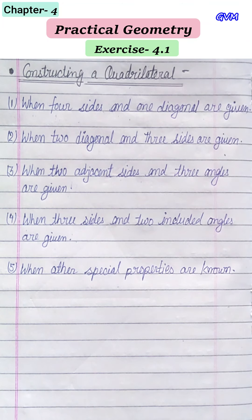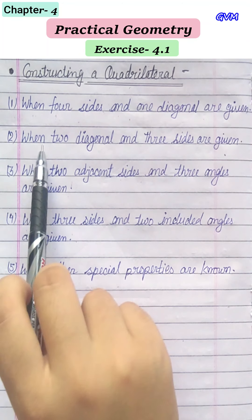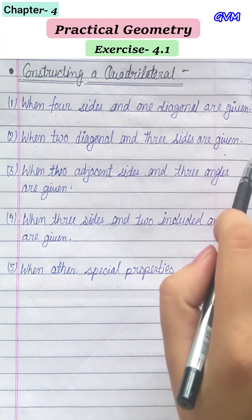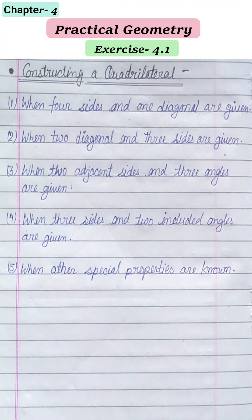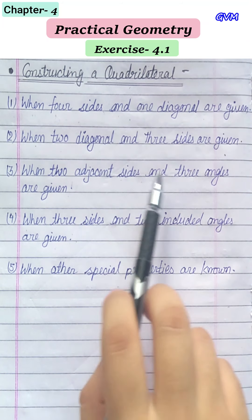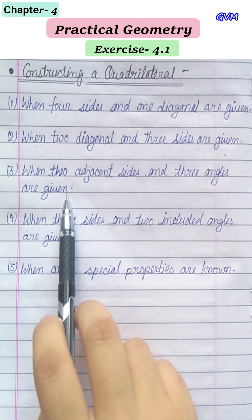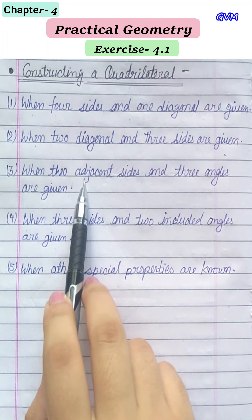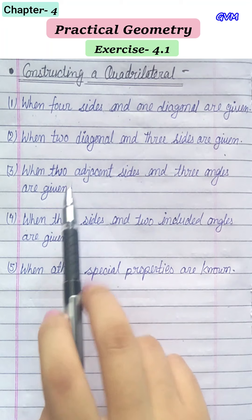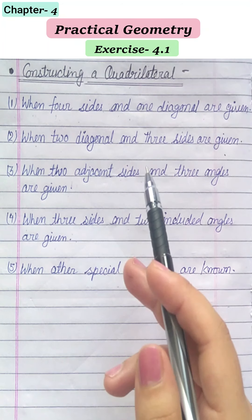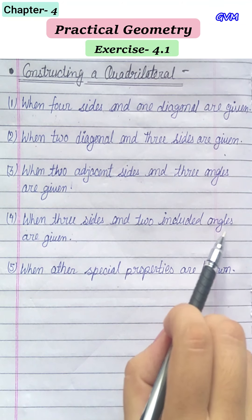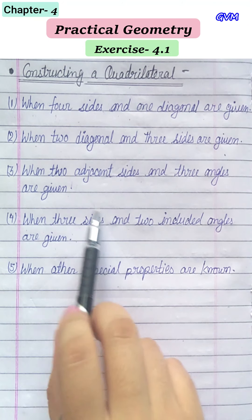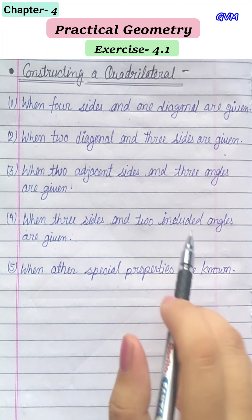The third case is when two adjacent sides and three angles are given. The fourth case is when three sides and two included angles are given.